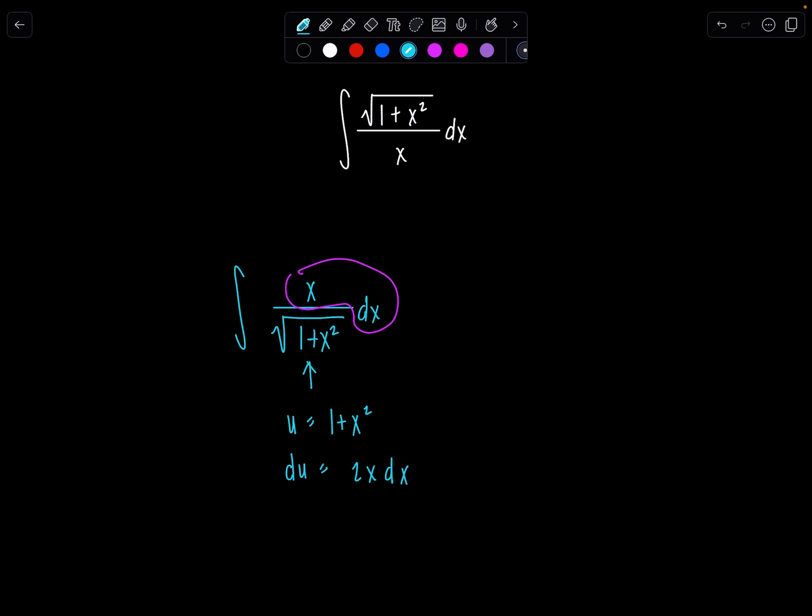And then 1 half du is x dx. So that's perfect. Now the problem here is the x is in the bottom. So I don't have x dx. I have 1 over x dx. But pay close attention to things like that.